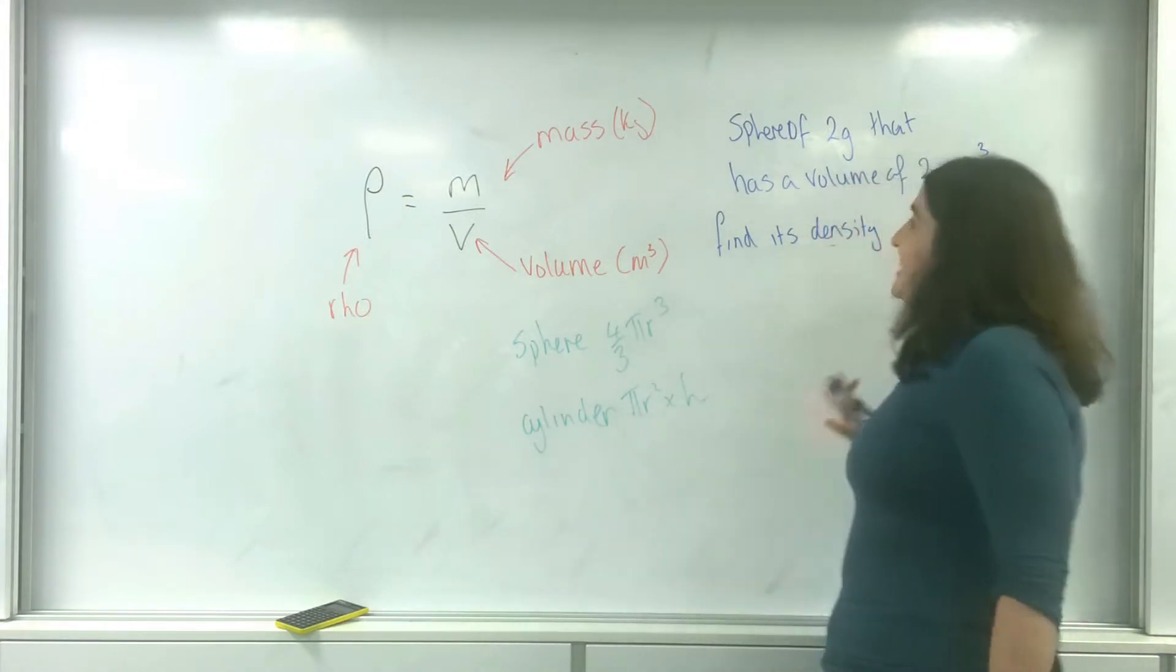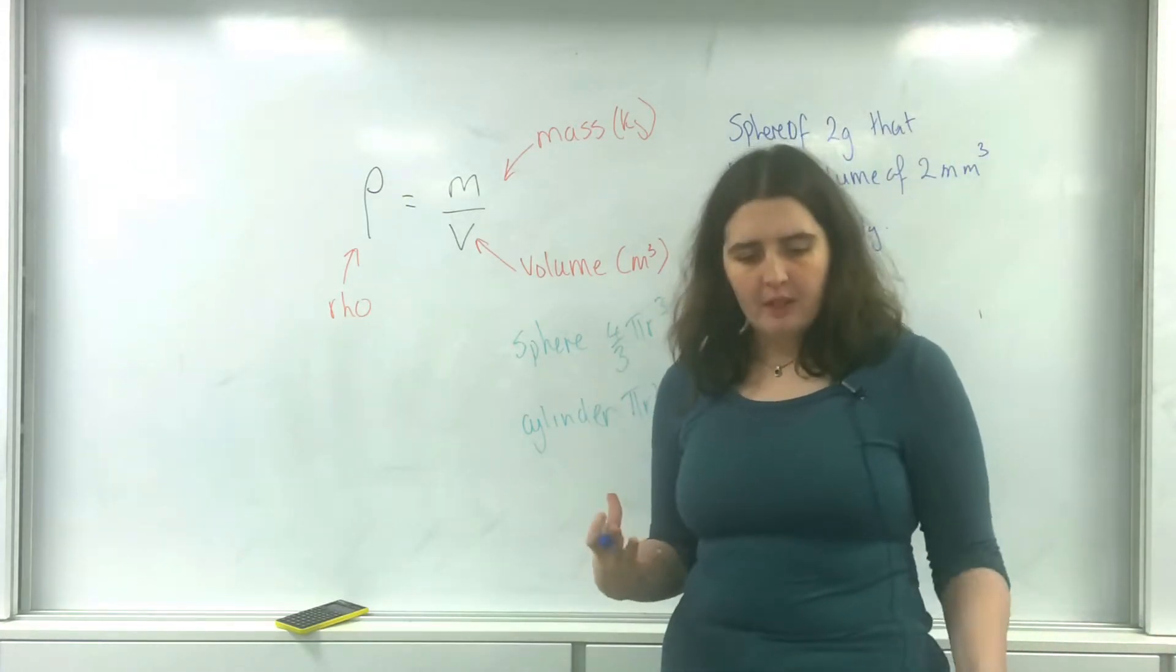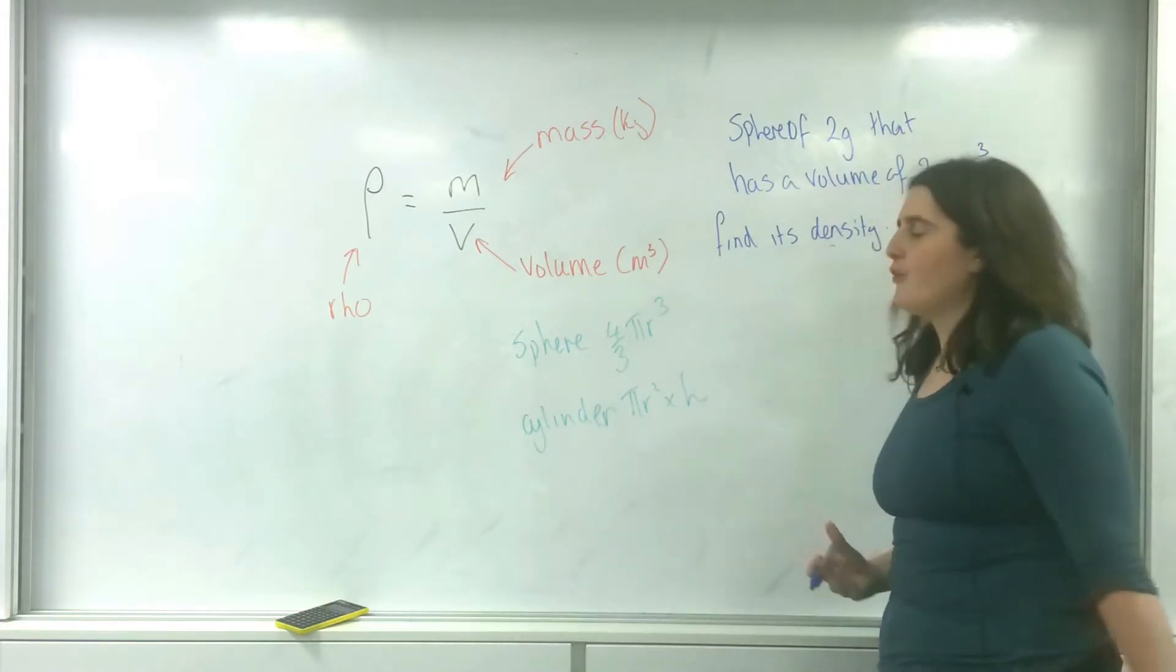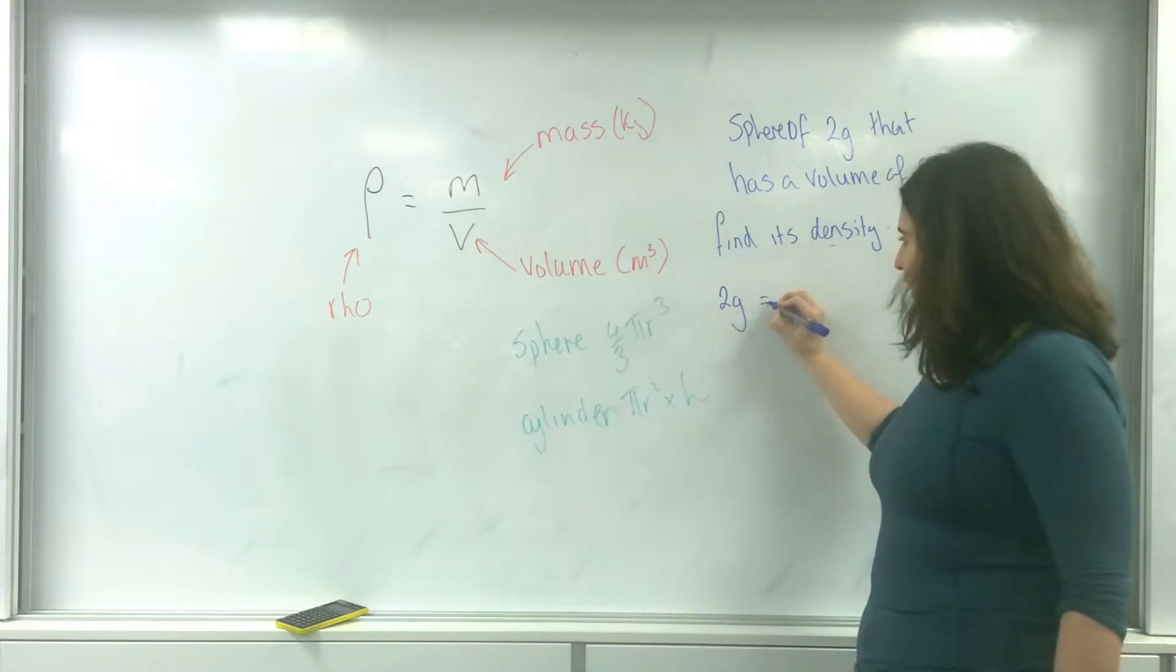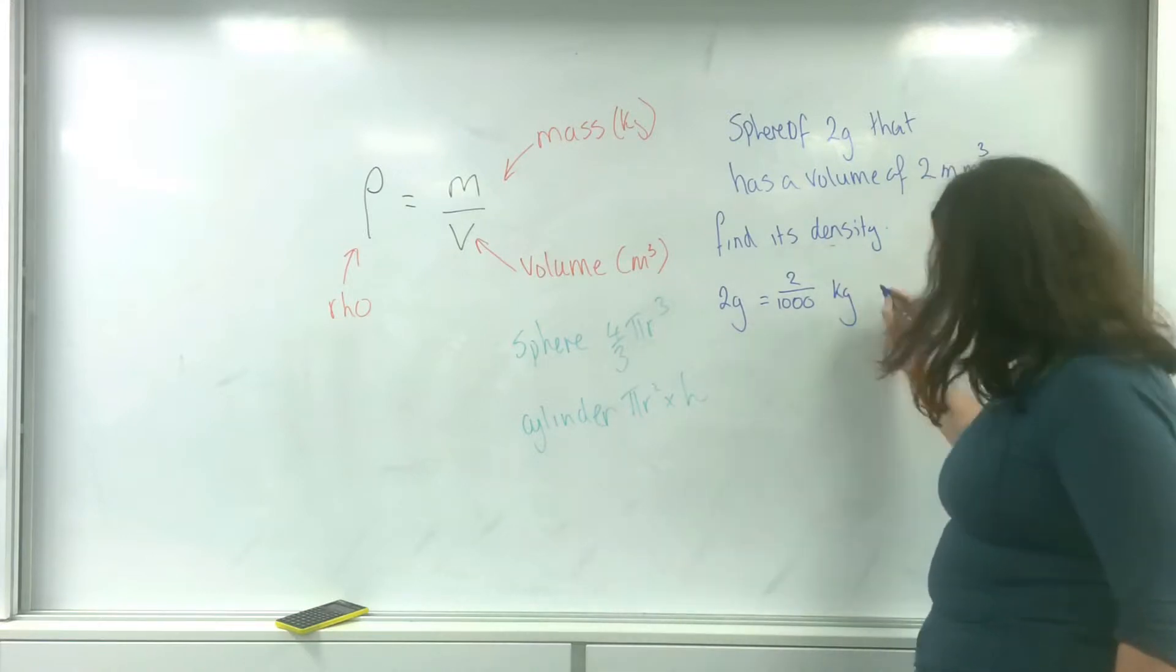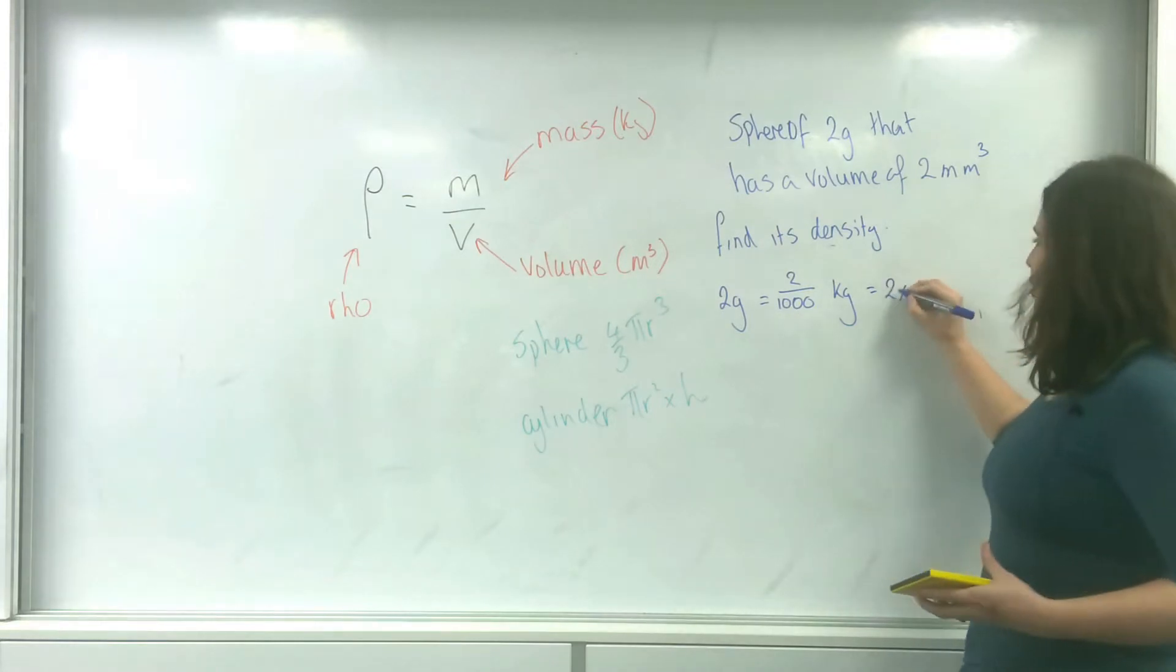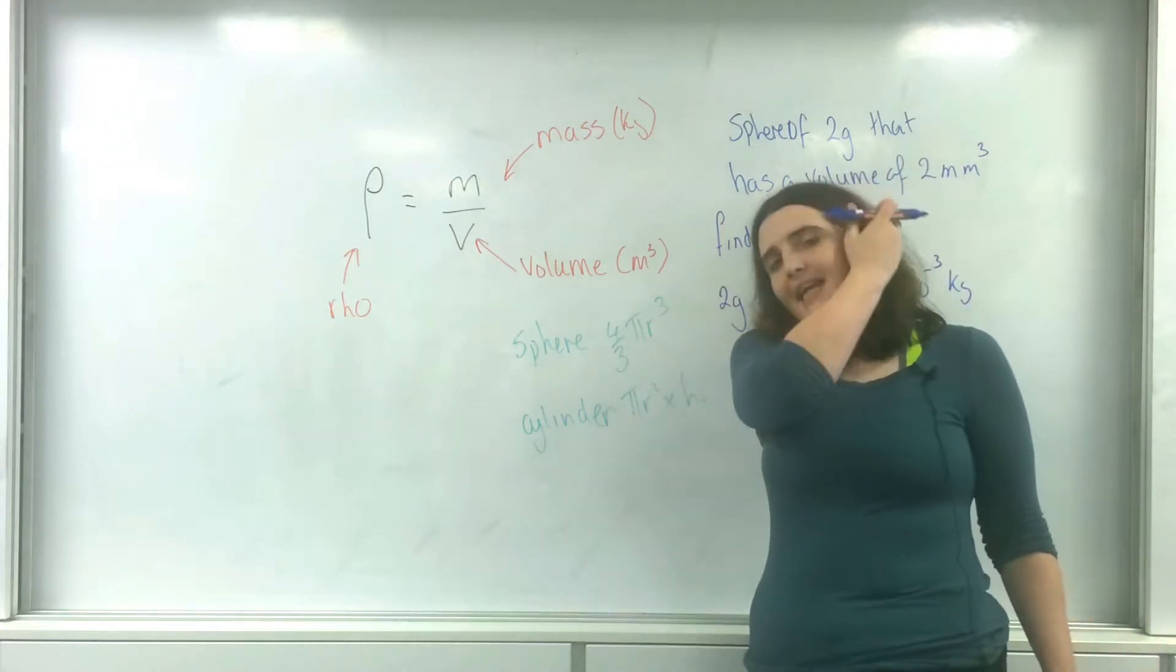I've got to get this information into kilograms and meters cubed. First, let's get my mass into kilograms. 2 grams equals 2 divided by 1,000 kilograms. That is 2 times 10 to the minus 3 kilograms, because there are 1,000 grams in 1 kilogram.